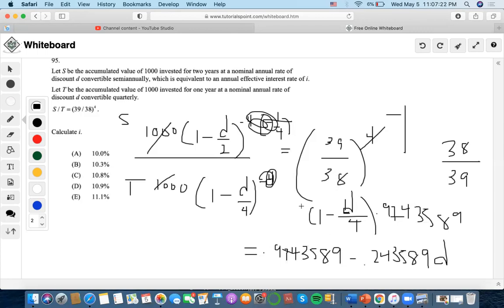This equals 1 minus d over 2, which could be 0.5d. Now let's simplify. I can move this to the other side by doing 1 minus 0.9743589 to get 0.0256411.